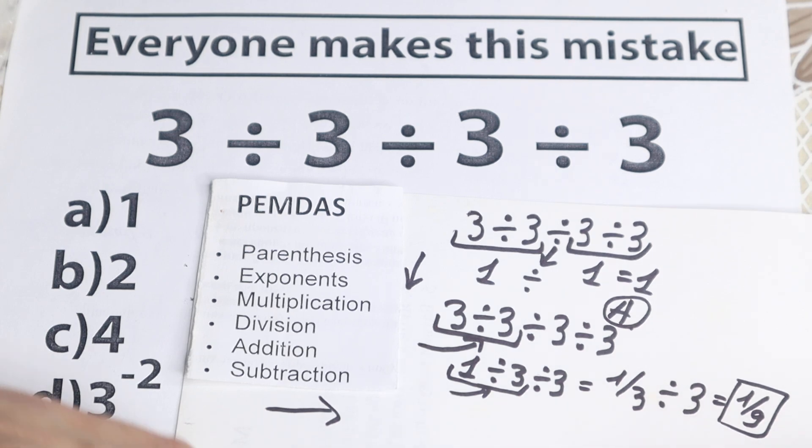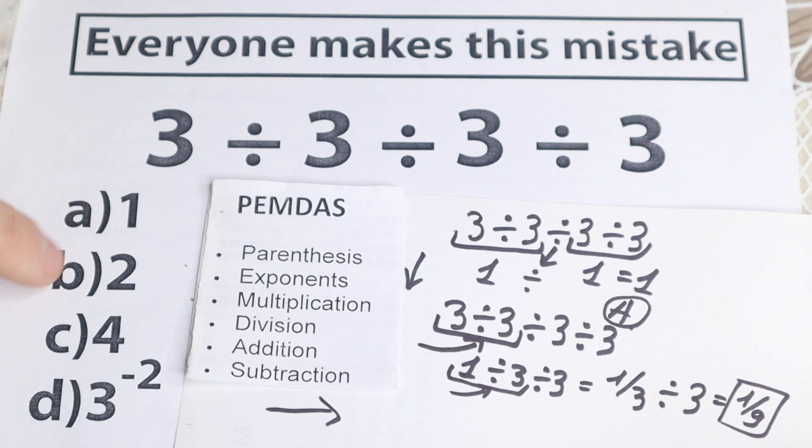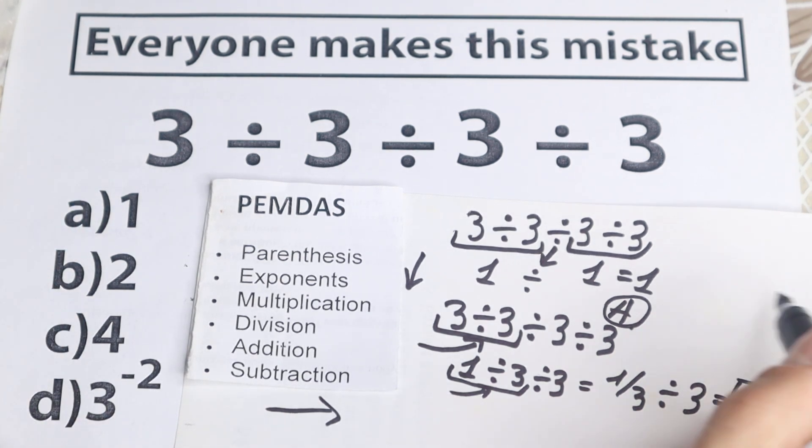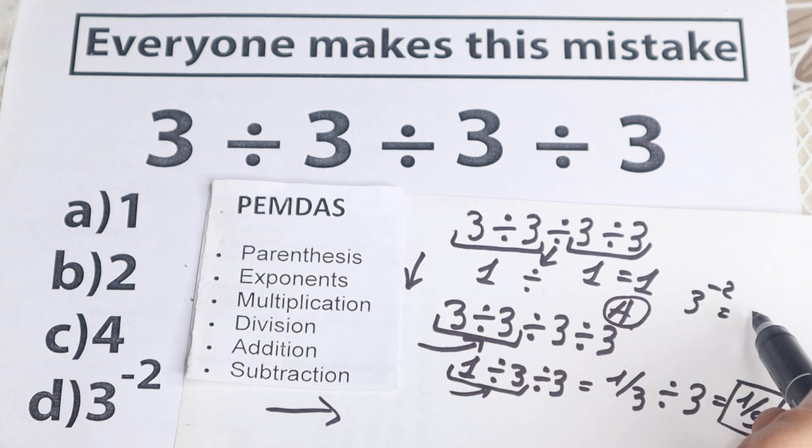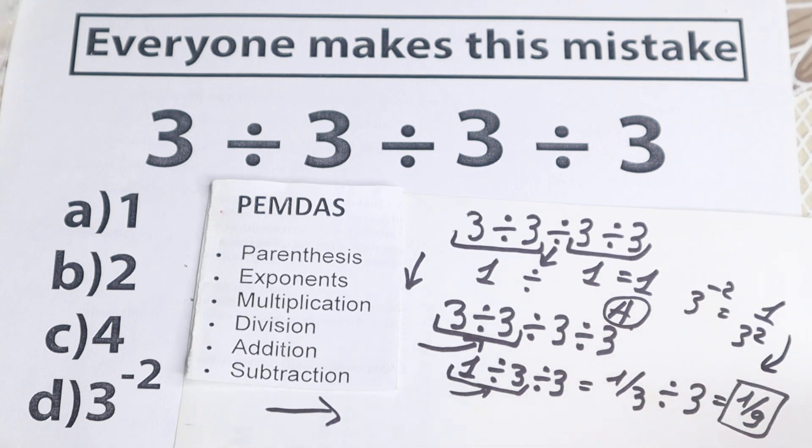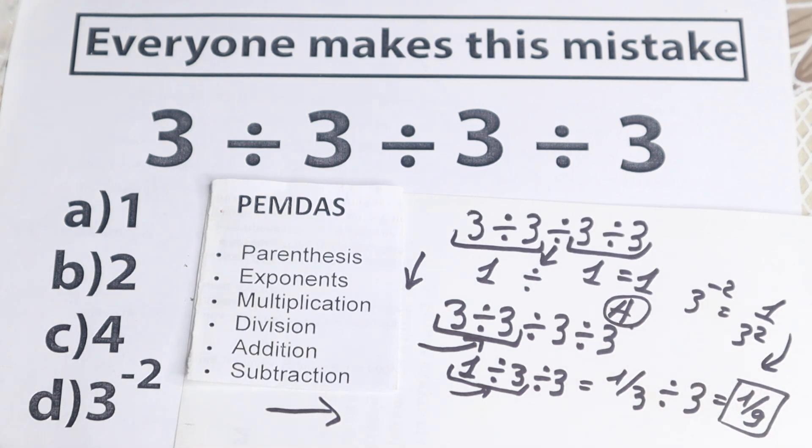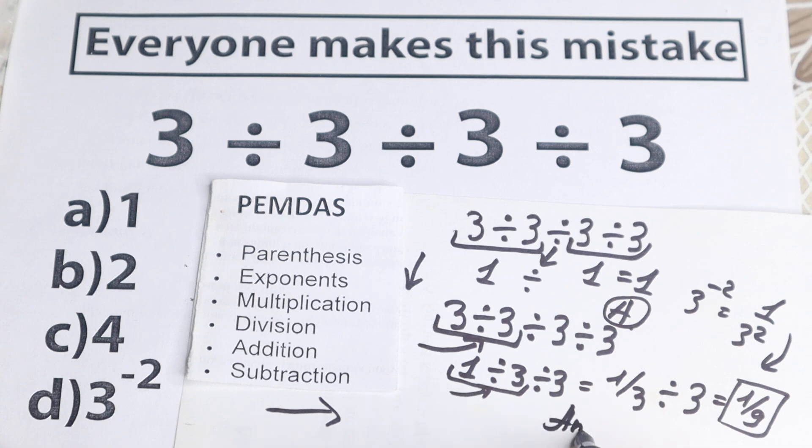But if you look at our options, we don't have this option right here, 1 is not our case, 2, 4, and 3 to the power minus 2, this is really interesting, because 3 to the power minus 2, if we bring it to our denominator, we will have like 1 over 3 square, which is absolutely the same as our case. So our correct answer is option D, option D is a correct answer to this problem.